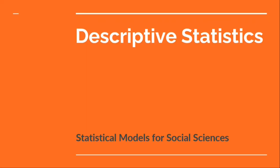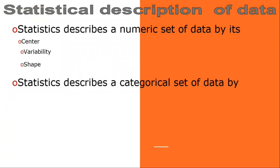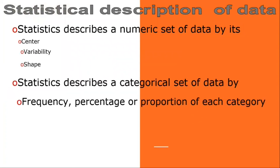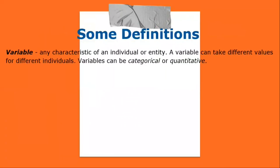Descriptive statistics: statistics describes a numeric set of data by its center, variability, and shape. Statistics describes a categorical set of data by the frequency, percentage, or proportion of each category. A variable is any characteristic of an individual or entity — a variable can take different values for different individuals, and variables can be categorical or quantitative.